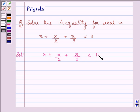We need to simplify this inequality first. So we will be multiplying each term on both sides by 6, that is the LCM of 2 and 3.